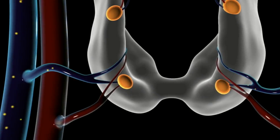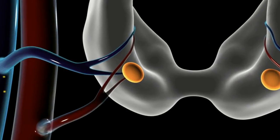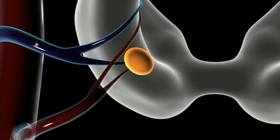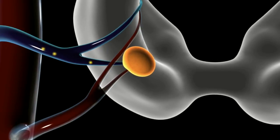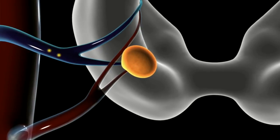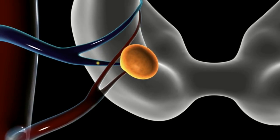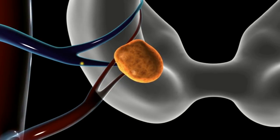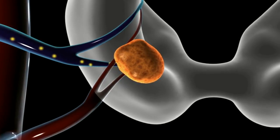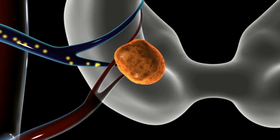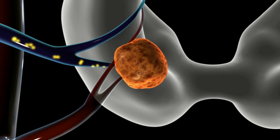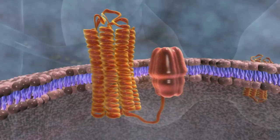The majority of the time, parathyroid tumors are located in one of the four glands. A parathyroid tumor is, in most cases, a benign tumor that grows to an abnormal size. As it grows, it releases more parathyroid hormone, thus causing hyperparathyroidism.